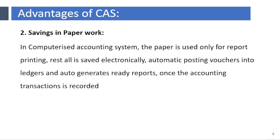Saving in Paperwork. A manual accounting system needs large physical storage space to keep accounting records, books, ledgers, vouchers, bills, invoices, and required legal business documents. In a computerized accounting system, paper is used only for report printing; the rest is saved electronically, with automatic posting of vouchers into ledgers and auto-generated ready reports once the accounting transactions are recorded.